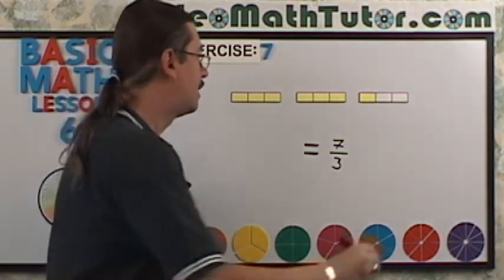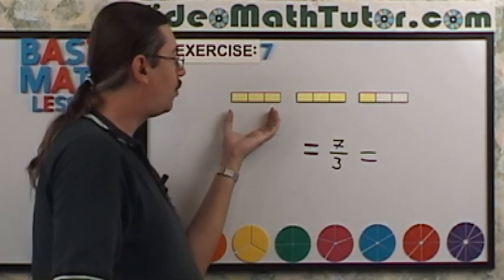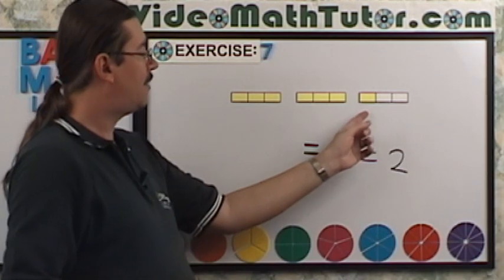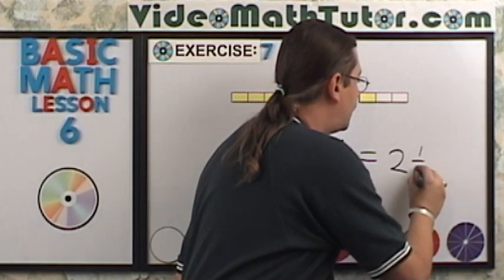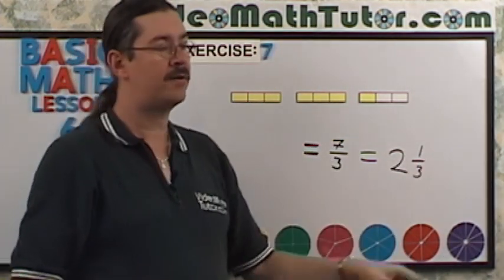That's my improper. But what else do we have? We have one whole, two wholes. We have two whole parts. And we have a little one left over. That's going to be one of three. So it's going to be two and one third is our mixed number.